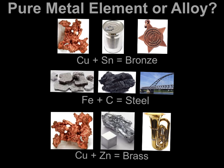Metals can be two things. They can either be a pure metal element, or they can be an alloy, meaning it's a mixture of a metal element and another metal element, or a mixture of a metal element and another element. Some pure metal elements would be copper, tin, iron, zinc. Some alloys would be putting together copper and tin and making bronze.